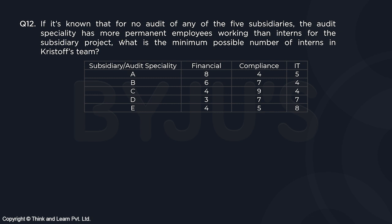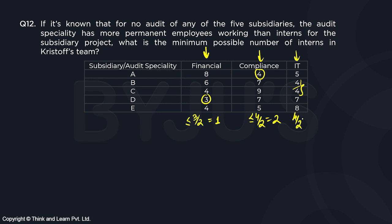Question number 12: If it is known that for no audit of any of the five subsidiaries does the audit speciality have more permanent employees working than interns for the subsidiary, what is the minimum possible number of interns in Christopher's team? To minimize interns, we maximize permanent employees. The minimum number of employees for financial is in subsidiary D — three — so maximum permanent in financial is three divided by two, which is one. For compliance, it's four divided by two, which is two. For IT, four divided by two, which is two.